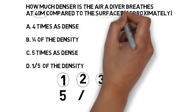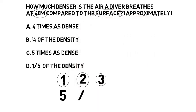Finally, step three. What depth are we comparing 40 metres to? Well, in this question, it's the surface. The pressure at the surface is 1 atmosphere.